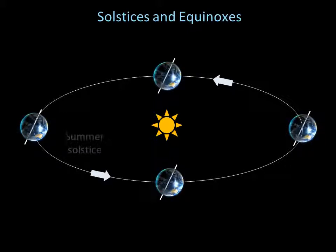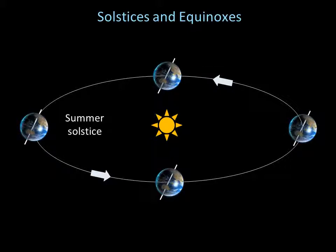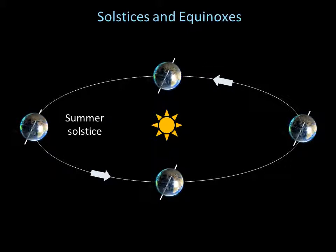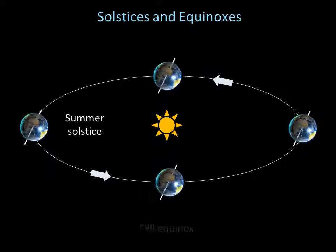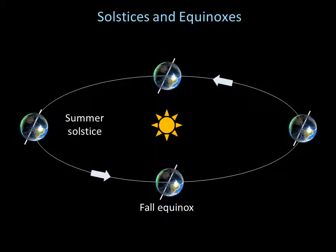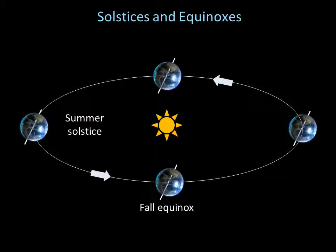We'll start with the summer solstice, which occurs around June 21st. It's the moment when the northern hemisphere is tipped most directly towards the sun and receives the most direct sunlight. The fall equinox occurs around September 21st. It's the moment when the northern hemisphere first starts to be tipped away from the sun.